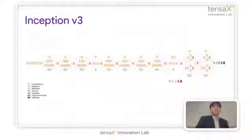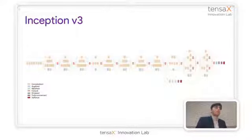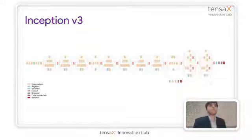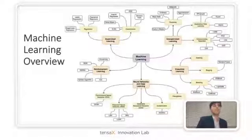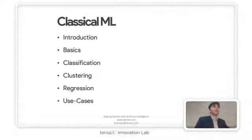This is a model used by Google. The models actually used for different applications can get very large — Inception V3 has many layers and many nodes. When we talk about machine learning, there are different kinds of things; we're going to go over them.